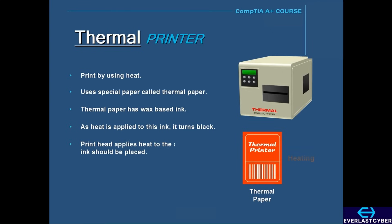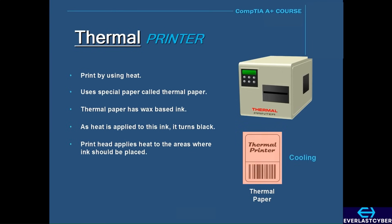In a thermal printer, the only thing the print head does is apply heat to the areas where the ink should be placed. Then, when the ink is cooled, it becomes permanent. And because of this technology, thermal printers are very quiet. Thermal printers are commonly used for printing labels and barcodes.